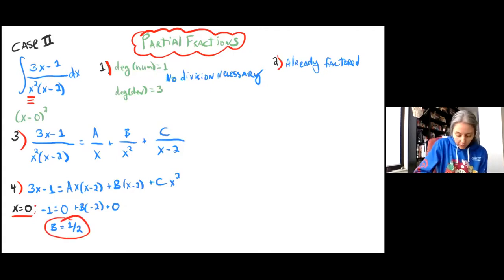Next zero is x equals 2. So we're going to plug that in. We get 6 minus 1 is equal to 0 plus 0 plus 4C. So 5 is equal to 4C, so C is equal to 5 over 4.